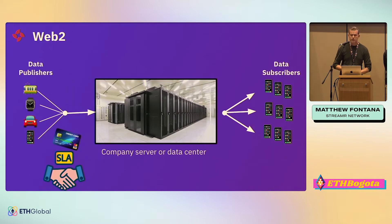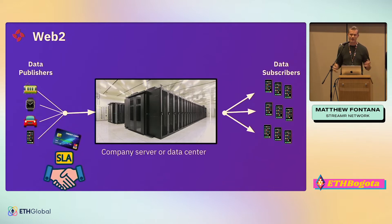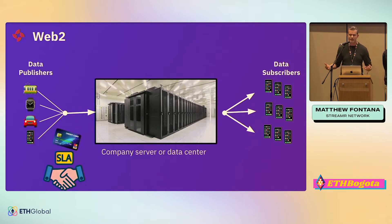In the Web2 world, what we're replacing is the centralized data piece — the data center. To move a lot of data around in real time, the pub-sub model decouples publishers from subscribers using a big server in the middle that can scale up and handle anything that comes at it. But of course this is centralized and we don't want to build apps that are dependent on Google Cloud, for example.